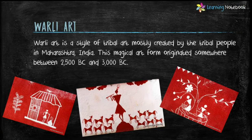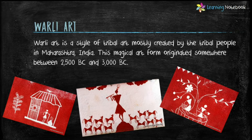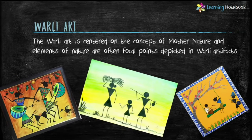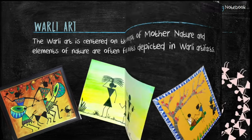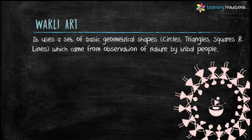Students, let's first learn about this magical worldly art. Worldly art is a style of tribal art mostly created by the tribal people in Maharashtra, India. This magical art form originated somewhere between 2500 BC and 3000 BC. This worldly art is centered on the concept of mother nature, and elements of nature are often focal points depicted in worldly artifacts. Also, worldly art uses a set of basic geometrical shapes like circles, triangles, squares and lines, which came from observation of nature by tribal people.